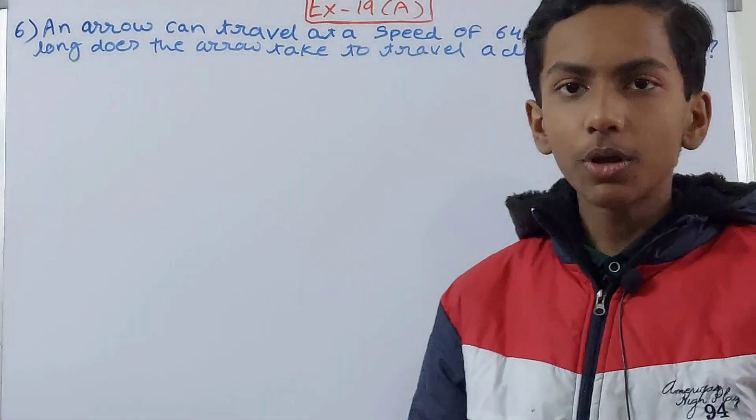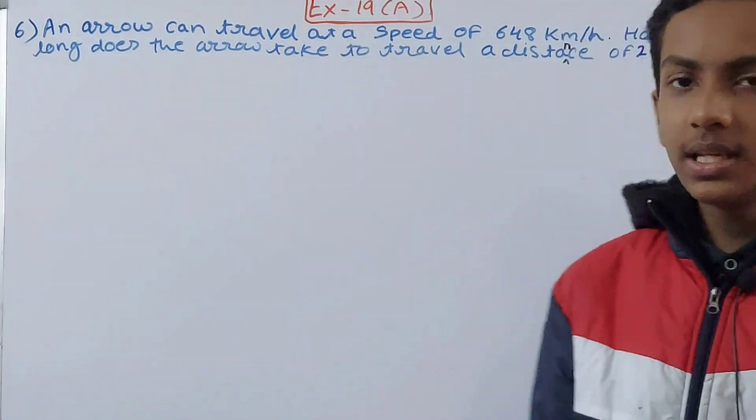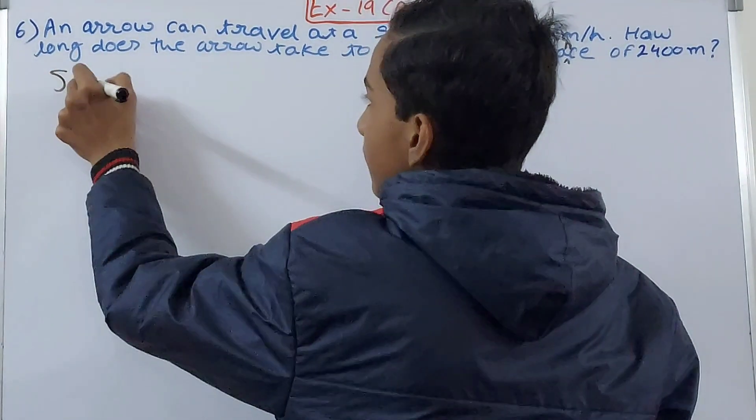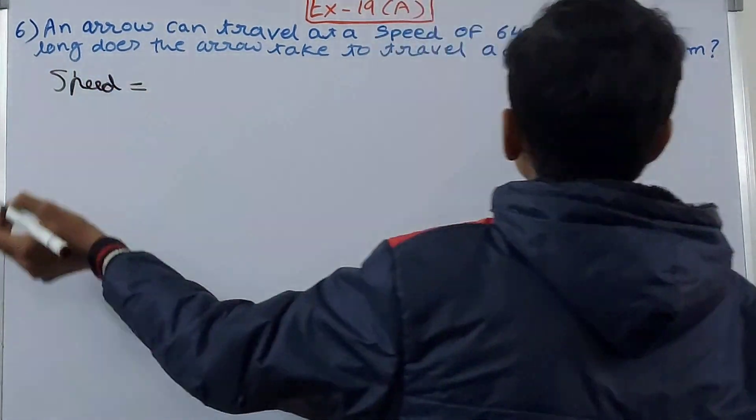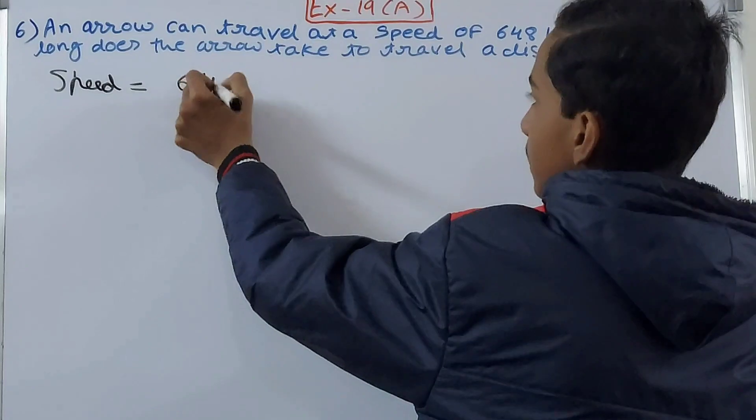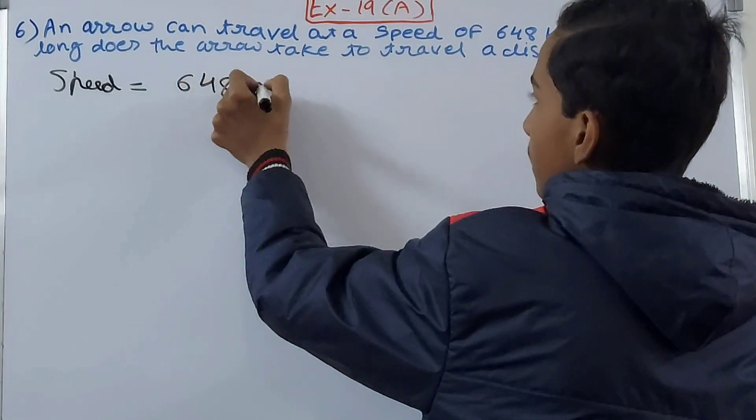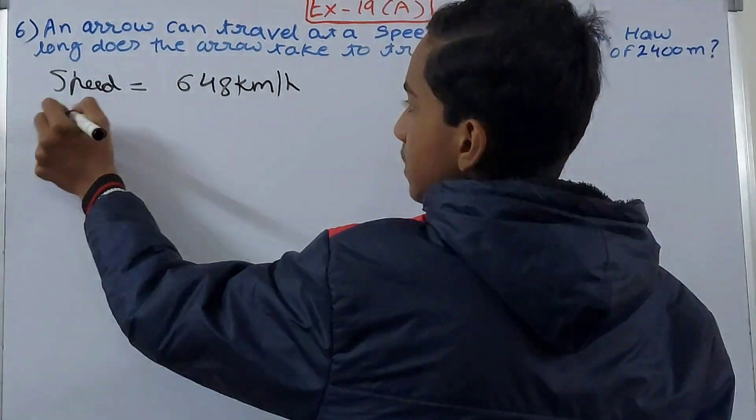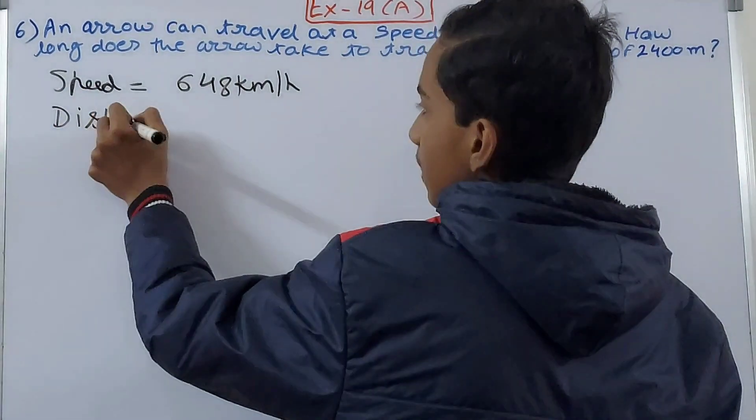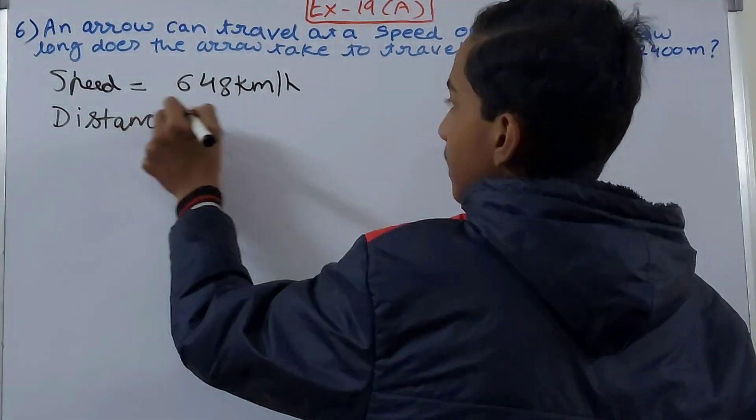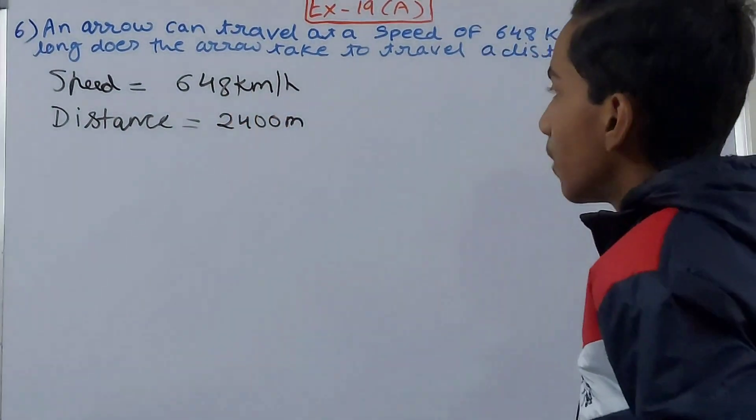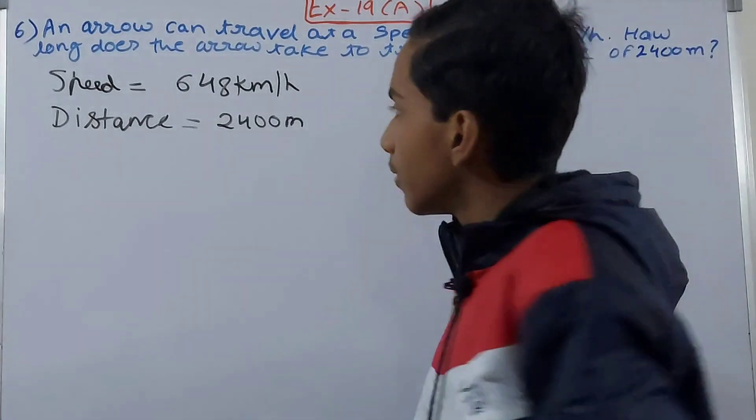So basically here we have to find the time. We know the speed, that is given to us, that is 648 kilometers per hour. And we know the distance that has been given in the question itself, that is 2400 meters. Now we do not know the time, so that is what we have to find.